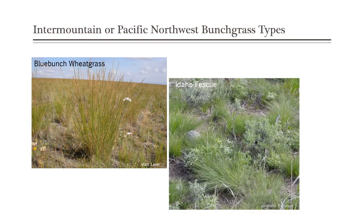It's called the bunchgrass type for a reason: these ecosystems are all dominated by either blue bunch wheatgrass, Idaho fescue, and to some degree Sandburg bluegrass. The two big bunchgrasses of this type are blue bunch wheatgrass and Idaho fescue.